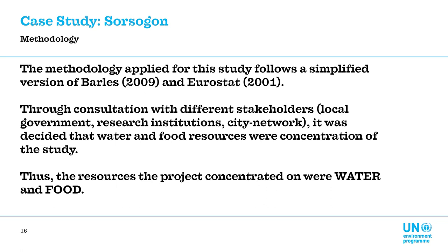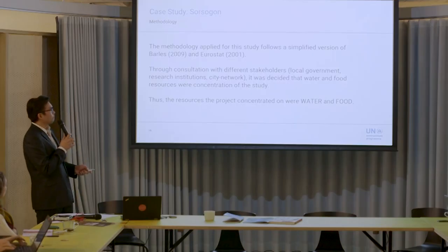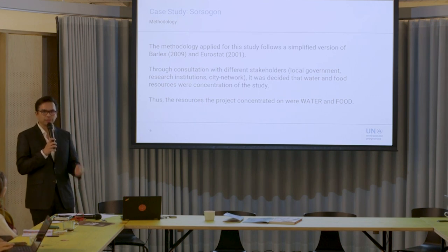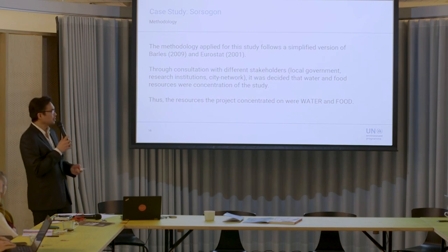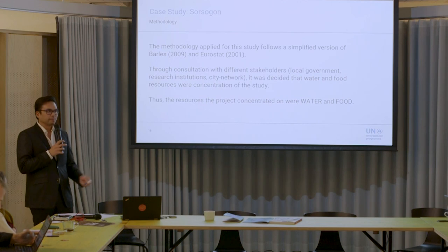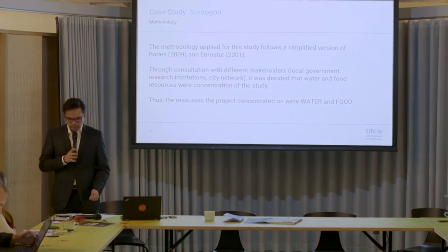Through stakeholder consultations and discussions with the local government, the project concentrated on water and food — although initially buildings, construction materials, and energy were also considered. The city specifically identified significant water losses affecting service delivery to inhabitants, and since a large portion of the city is farmland, food — specifically rice, which requires a lot of water — became a key focus. The two resources are very much linked together.